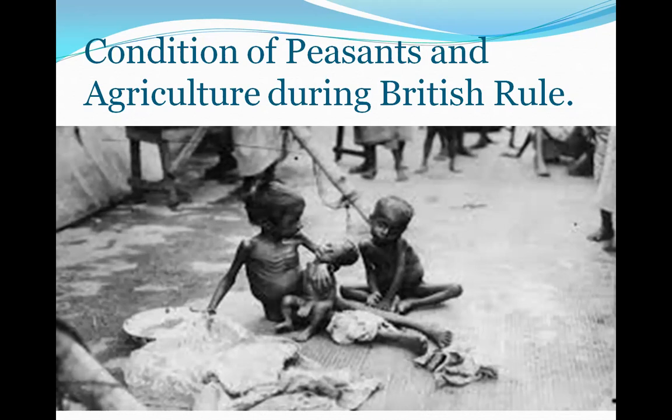Many times the peasants had to sell their jewellery to pay the revenue. A large number of peasants had to borrow money from moneylenders and consequently fell into a debt trap. Once they were in this debt trap, they were never able to move out of it. Farmers lost their land and agriculture suffered in many regions. Moreover, Bengal witnessed a terrible famine in the year 1770 CE, in which a large number of people died of starvation.